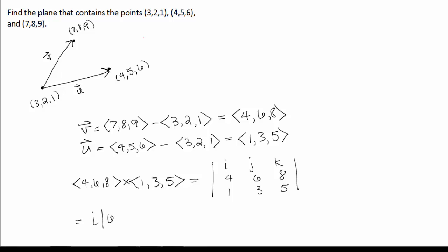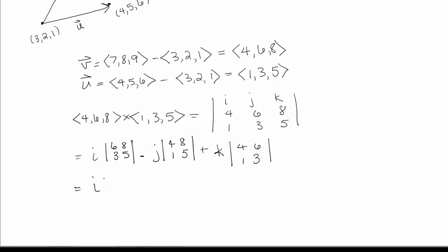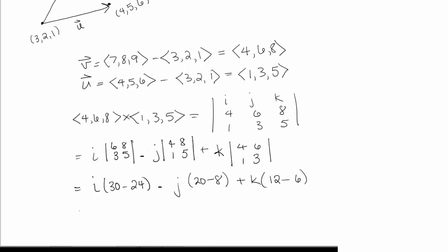This gives us I times (6·5 − 8·3), so 30 minus 24; minus J times (4·5 − 8·1), so 20 minus 8; plus K times (4·3 − 6·1), so 12 minus 6. Simplifying, this is 6I minus 12J plus 6K, which is the vector (6, −12, 6). So now we can find an equation for our plane.